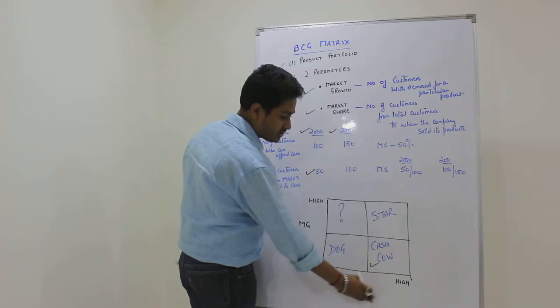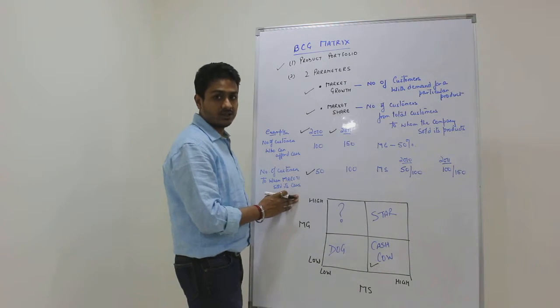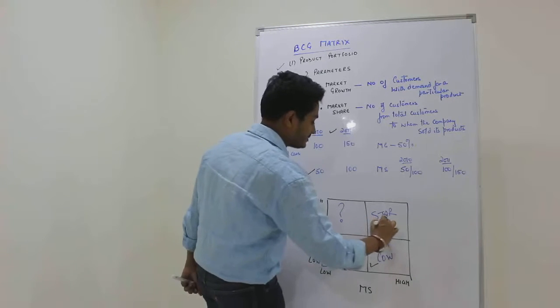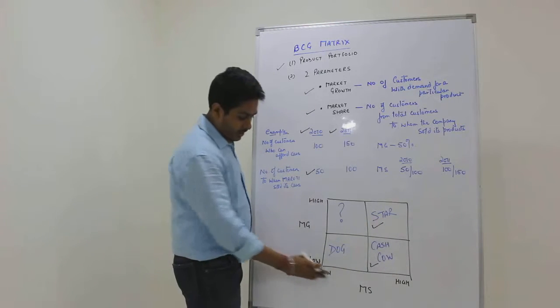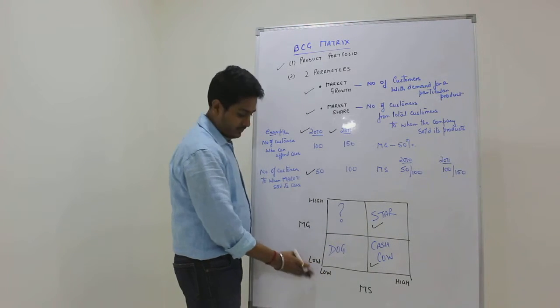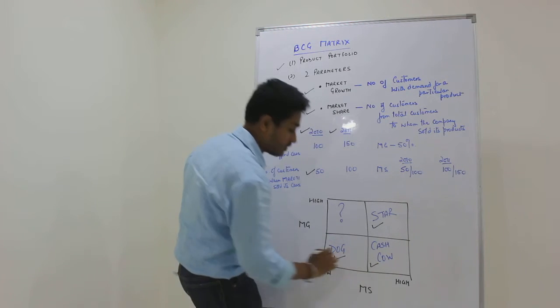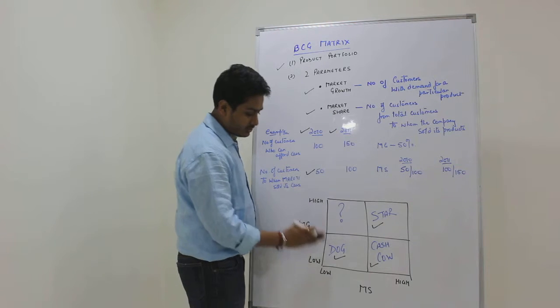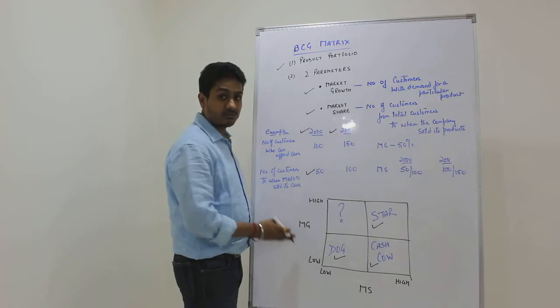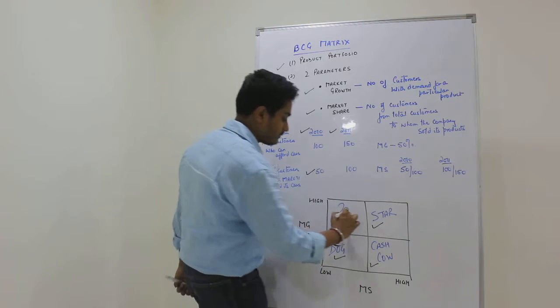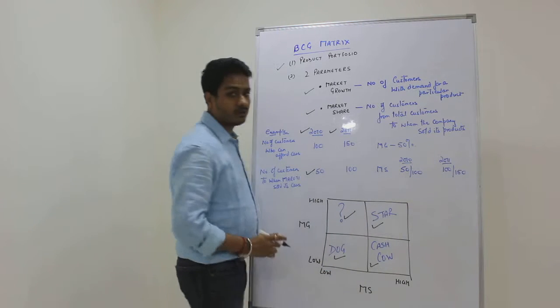When the market share is high and the market growth is also high, this is a product classified as a star. When the market share is low and the market growth is also low, the product is classified as a dog. And the last option: when market share is low but the market growth is high, that is when we classify the product as a question mark.